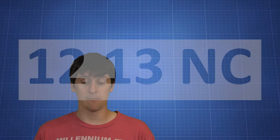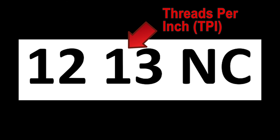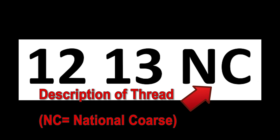When we read the specifics of a screw we need to understand what all those letters and numbers mean. The number in front tells us the diameter of the screw. The next number tells us how many threads per inch there are on the screw. The last part is the description of the thread. In this case it says NC.